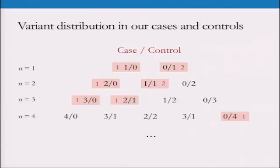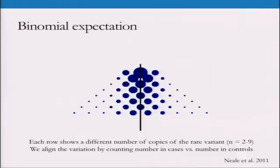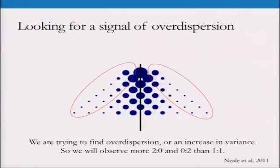What are we expecting to see? We expect it to look like a binomial distribution. If you flip a coin twice, you'd expect 50% of the time to get one heads and one tails, 25% two heads, and 25% two tails — the size represents how likely that is to occur. Most falls in the middle with little tails on the edges. When doing overdispersion tests, we're looking out in those tails — trying to find instances where you're getting more two-to-zeros and more zero-to-twos than expected.